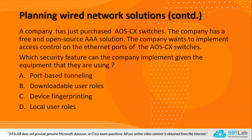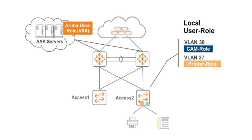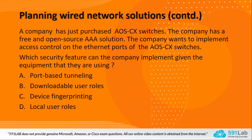Option D — local user roles: local user roles allow use of a third-party AAA server. Local user roles are defined on the switch. When a device connects and authenticates successfully and a specific attribute is passed to the switch, the switch applies that user role to the device. This is correct. The correct answer is Option D.